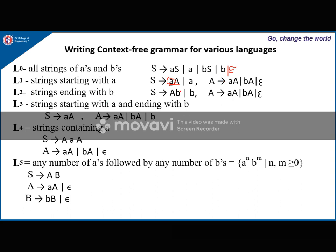Next: strings ending with B. The idea is to have a variable generate remaining symbols and end with b. For A, use the same production generating all symbols of A's and B's including epsilon. Next: strings starting with A and ending with B — S derives aAb, meaning it starts with A and ends with B, with intermediate symbols generated by A derives aA | bA.